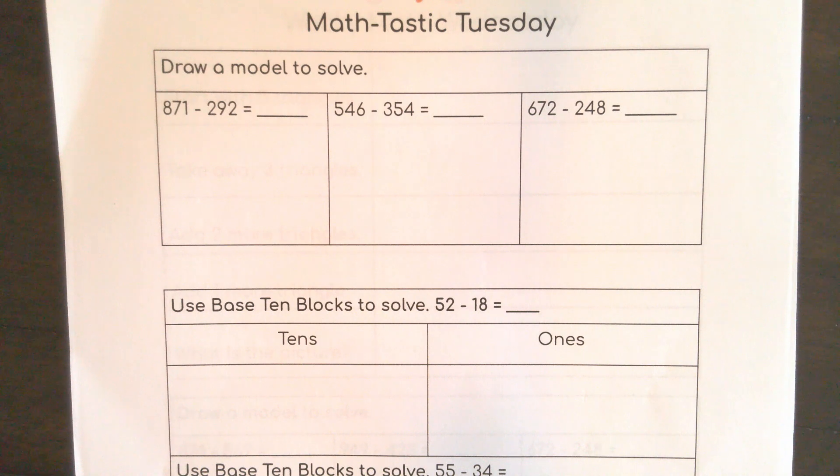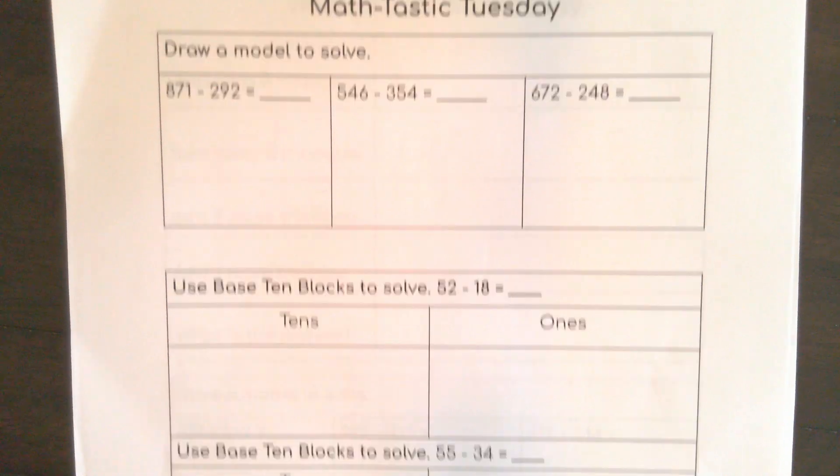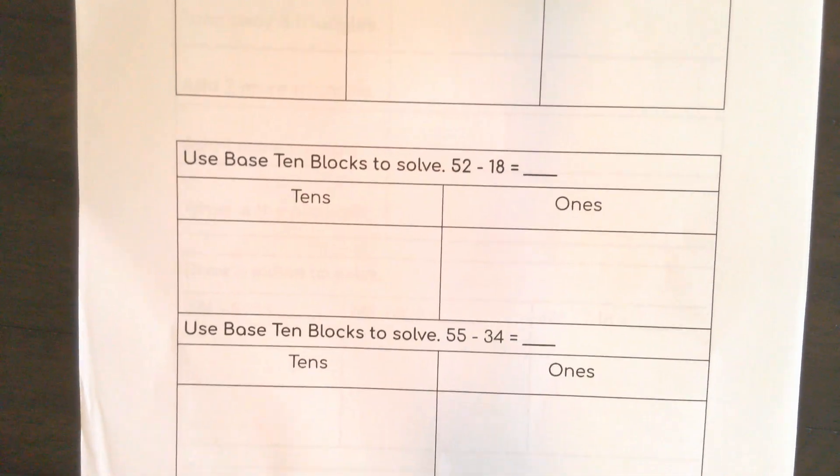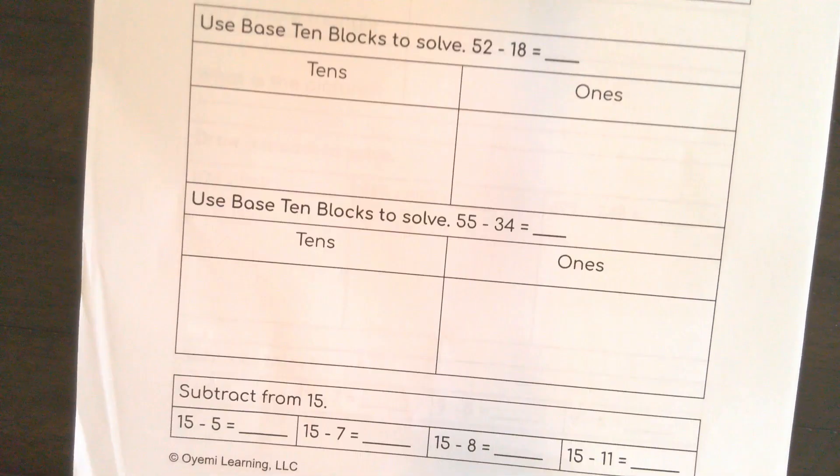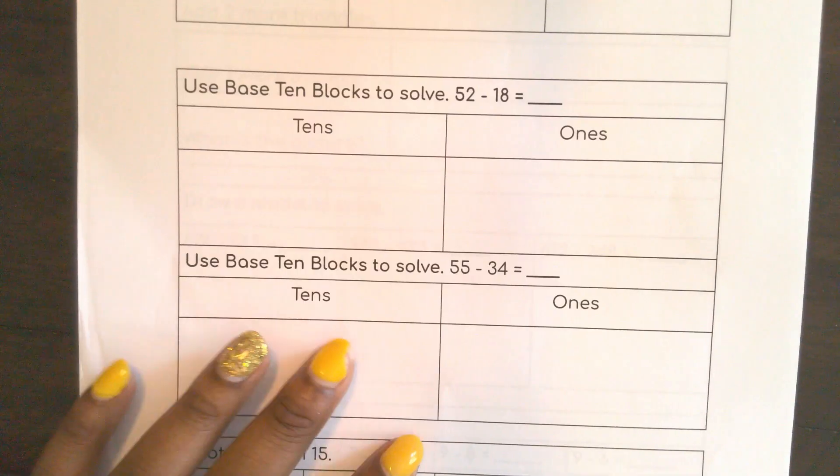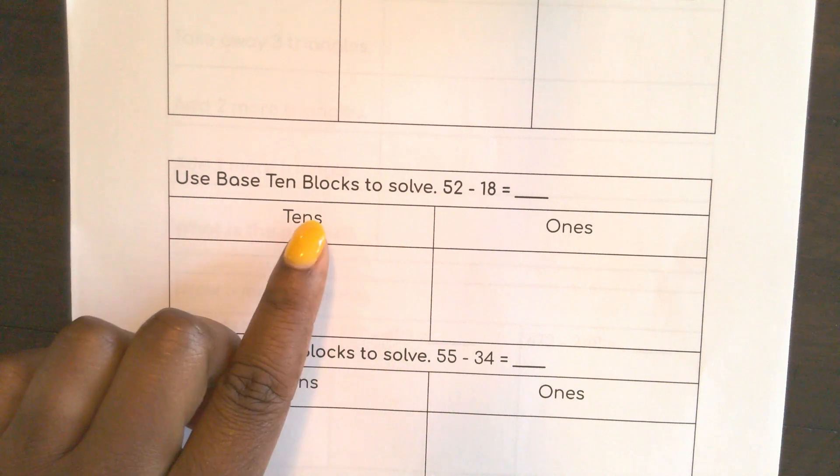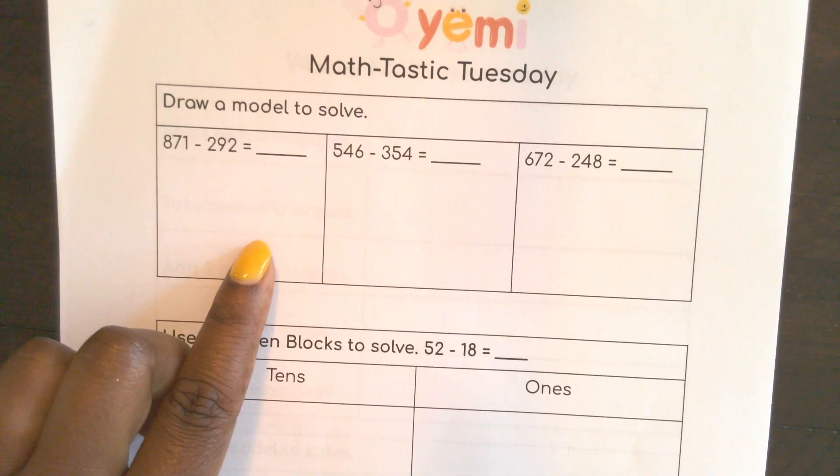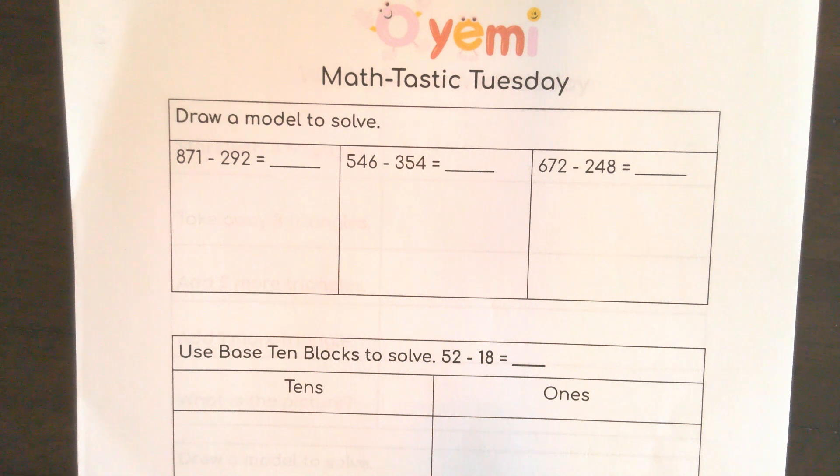Hello and welcome to a fantastic Math-tastic Tuesday. Today we are going to draw a model to solve. We're doing more with subtraction. We're going to use base 10 blocks to solve two-digit subtraction and at the bottom we're going to manipulate numbers and subtract from 15. See those patterns from 15. So because we're going to use base 10 blocks here I would like us to start up here with using expanded form and standard algorithm.